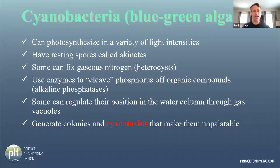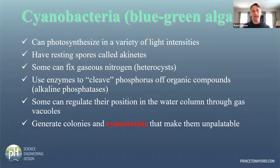Cyanobacteria are very successful in lake environments. They can photosynthesize in a wide variety of light intensities. Certain cyanobacteria do great right on the surface creating those surface scums, and others prefer deeper waters. Many of them create spores called akinetes. As the water temperature cools down, these spores are created, they fall to the sediments, and in springtime when the lake mixes, it brings those akinetes back up and they hatch.